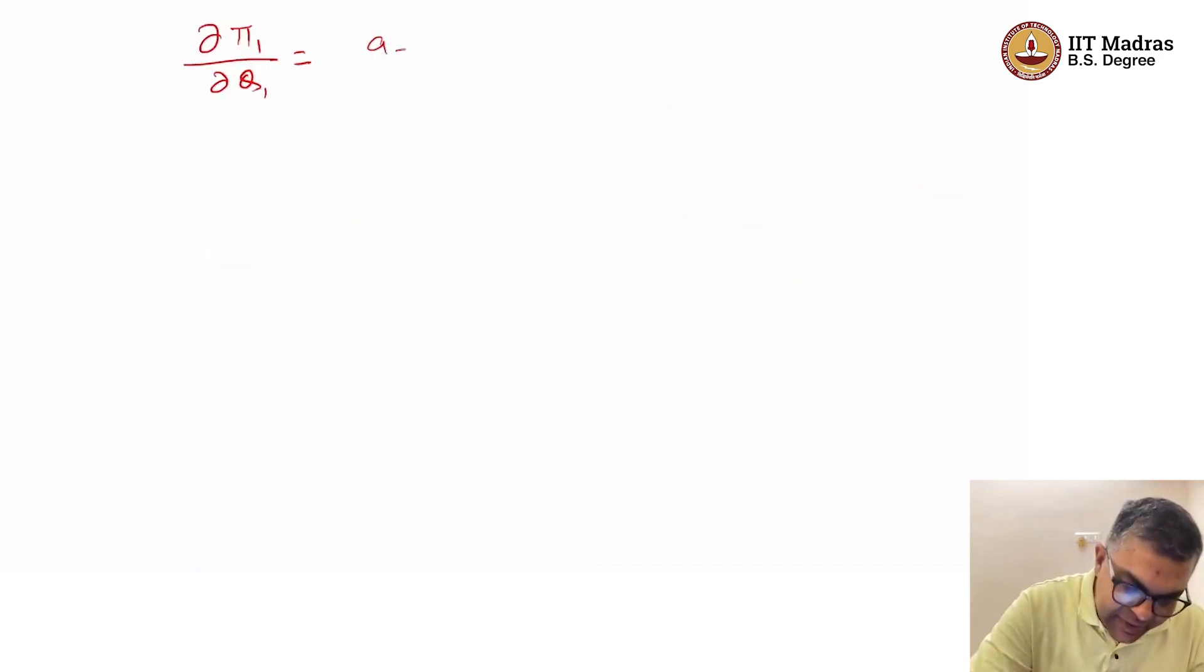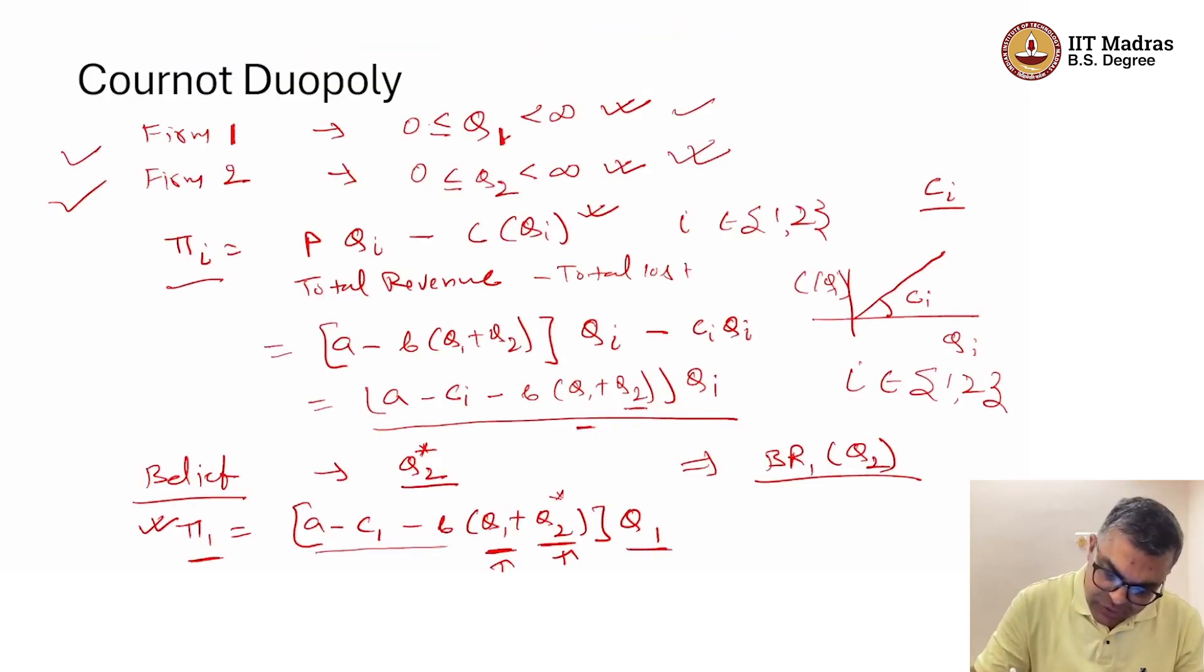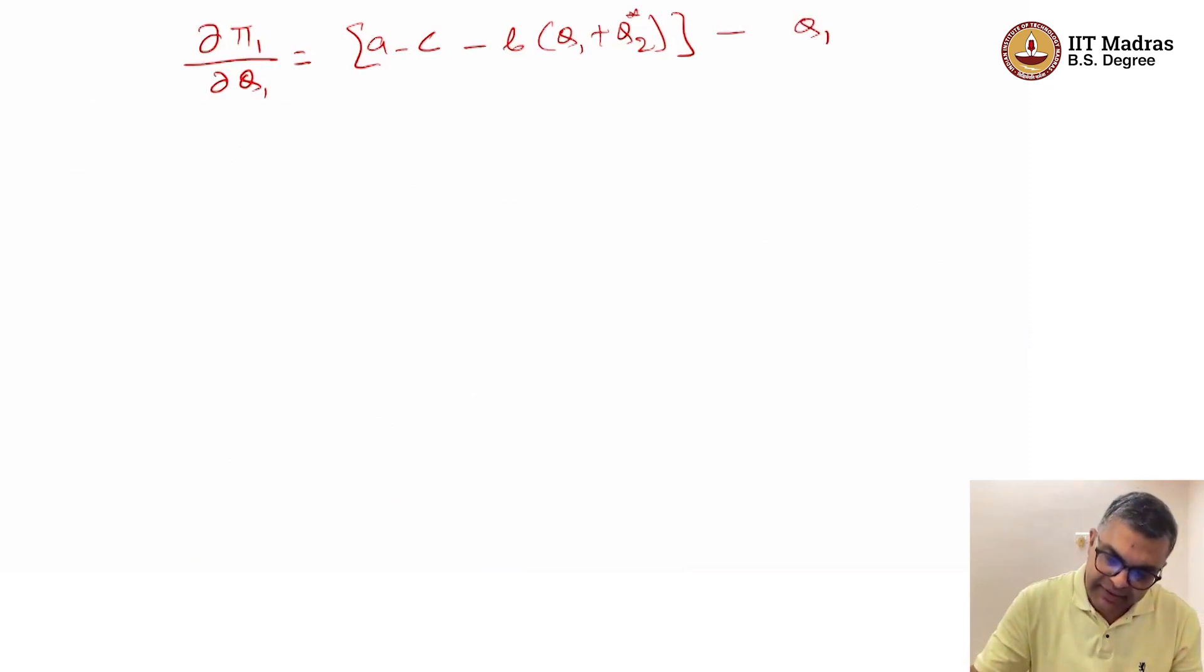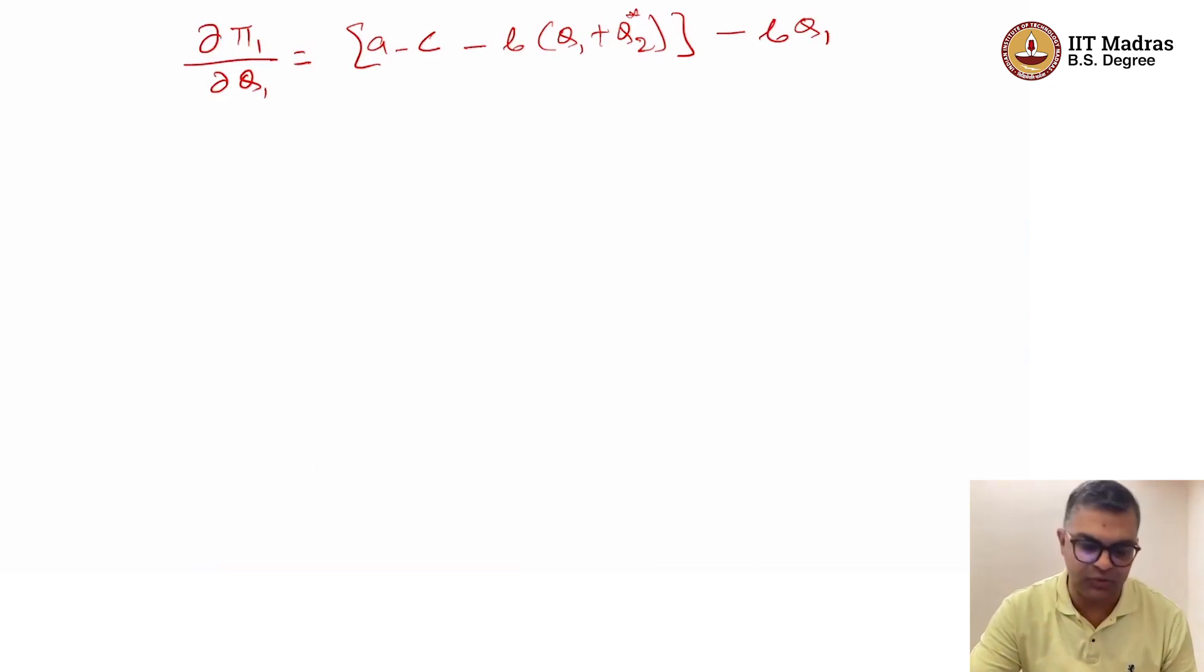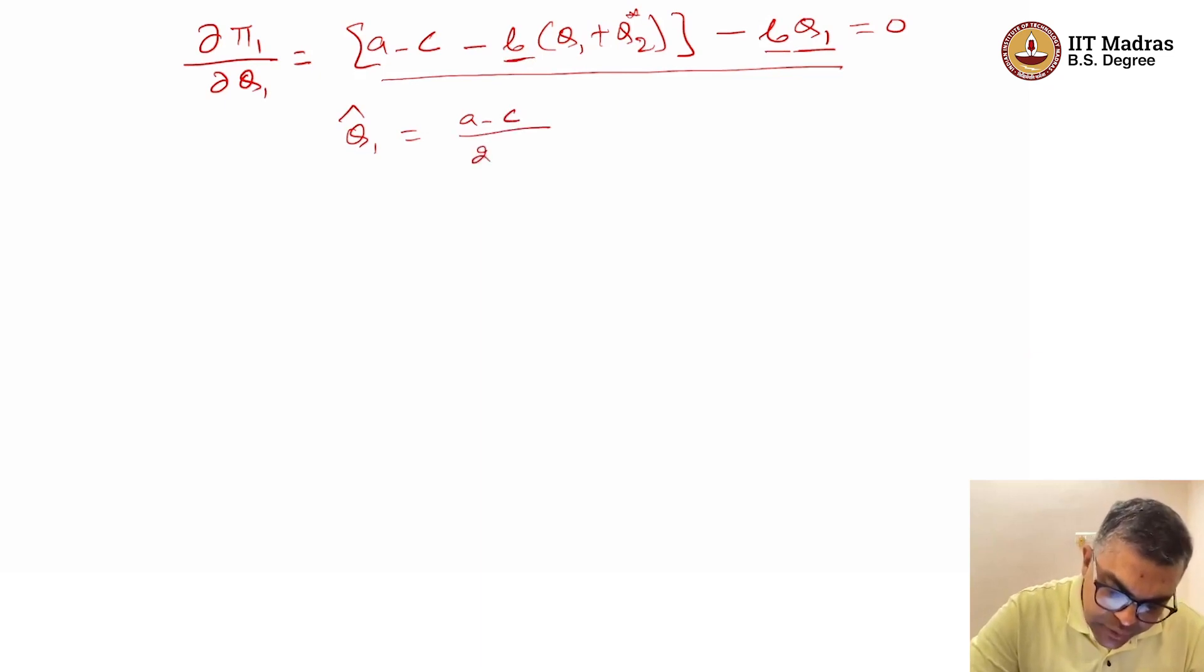Whatever firm 1 believes about what firm 2 is doing, from there firm 1 can get its best response. If we do the optimization for firm 1, firm 1 will optimize with respect to Q1. We can get A minus C1 minus B times Q1 plus Q2 minus—once we differentiate using the multiplication rule—we get minus BQ1. To maximize, this is equal to 0. If we solve, Q1 hat is A minus C1 divided by 2B minus Q2 star by 2.